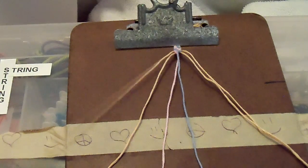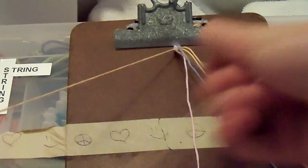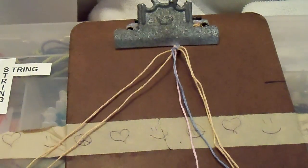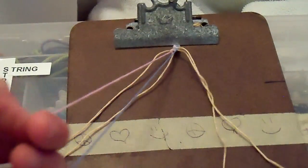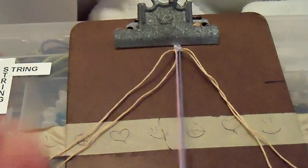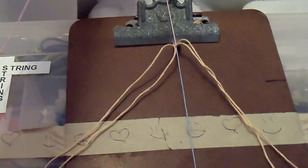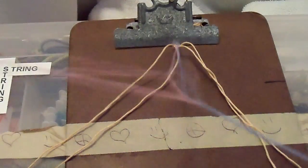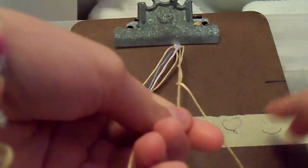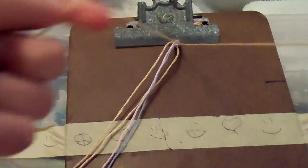So let's begin. With your first two strings, you're going to do a backwards-forward knot. With your next two, you're going to do a forward knot. And with your last two, you're going to do a forward-backward knot.